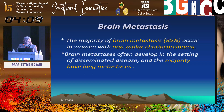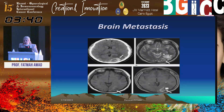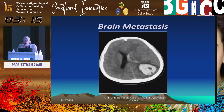Brain metastases occur in 85% of cases with non-molar choriocarcinoma rather than molar type. When brain metastases are found, look for lung involvement as it is usually also affected. These metastases are single or multiple, affecting the gray-white matter interface, showing hemorrhage, and are usually highly vascular and enhancing. On non-enhanced CT, peritumoral edema and intratumoral hemorrhage may be seen. On post-contrast study, an enhancing nodule is visible within the metastasis. Completely hemorrhagic brain metastases from choriocarcinoma can even extend into the lateral ventricle.